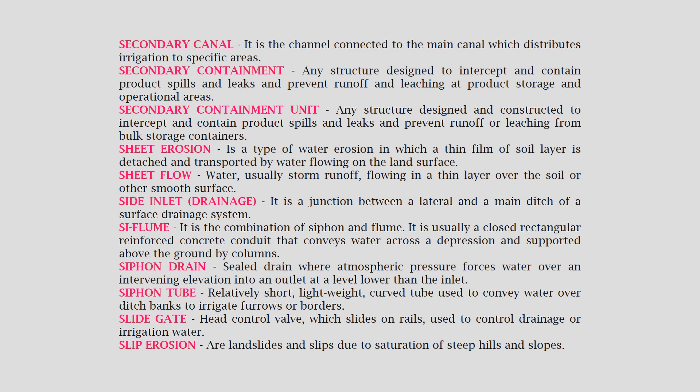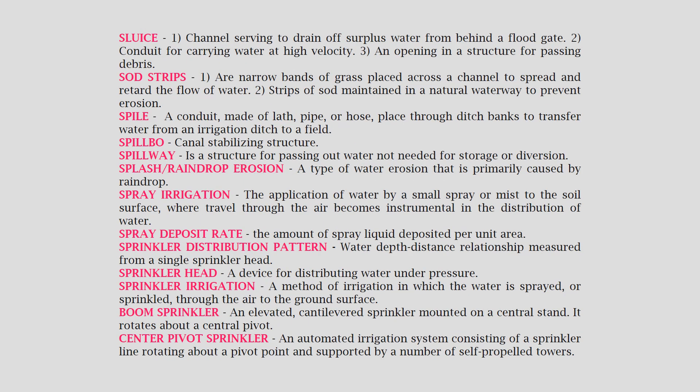Slip erosion: landslides and slips due to saturation of steep hills and slopes. Sluice: (1) a channel serving to drain off surplus water from behind a flood gate; (2) a conduit for carrying water at high velocity; (3) an opening in a structure for passing debris. Sod strips: (1) narrow bands of grass placed across a channel to spread and retard the flow of water; (2) strips of sod maintained in a natural waterway to prevent erosion.